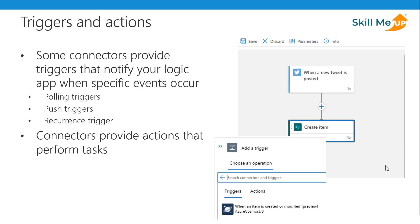Some connectors provide triggers that notify your Logic App when a specific event happens — the trigger then creates and runs an instance of that Logic App. For example, the FTP connector provides a 'when a file is added or modified' trigger. Logic Apps provides polling triggers that check for new data at a specified frequency, push triggers that listen for new data at an endpoint, and recurrence triggers that create and run instances based on a specified schedule.